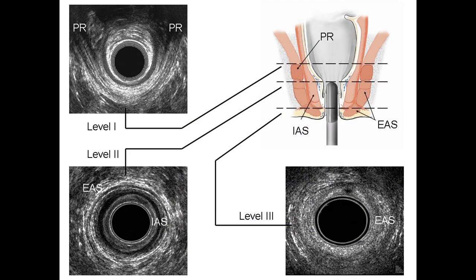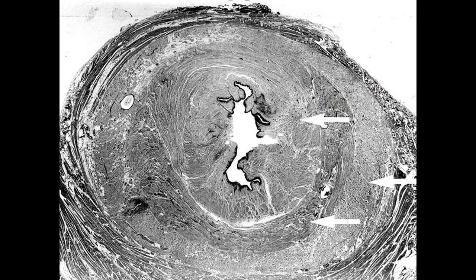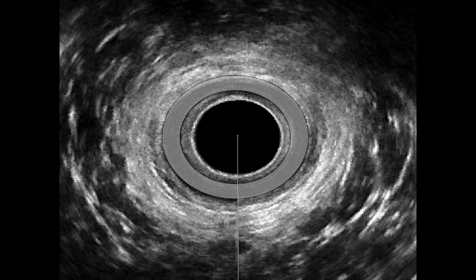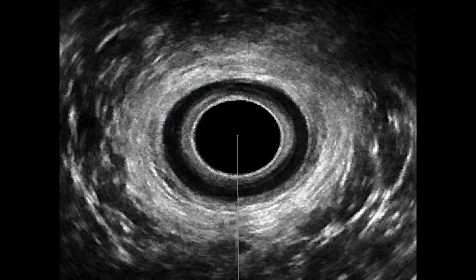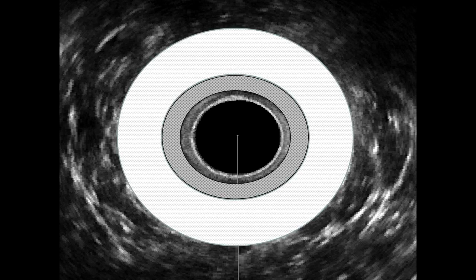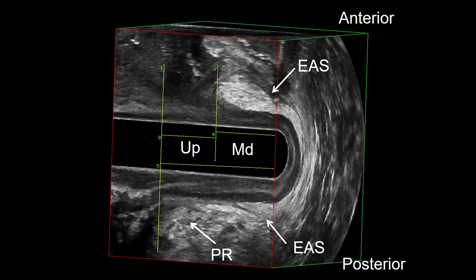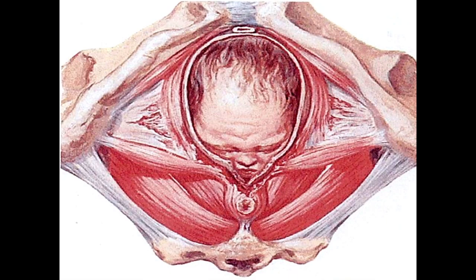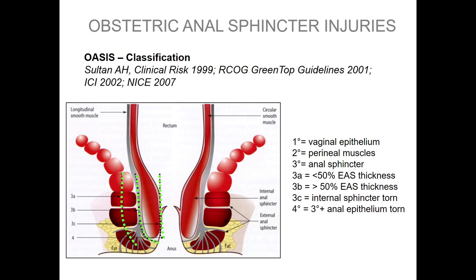We know that patients with outlet obstruction can even have fecal incontinence, and this should be addressed with endoanal ultrasound to visualize the three levels of the anal canal. The upper level with the puborectalis muscle, the middle level with the two rings of the internal and external sphincter, and the lower level with the subcutaneous part of the external sphincter. This is a cadaveric dissection — you see the internal and external sphincter — and this is ultrasound showing internal and external sphincter. These images are really amazing.